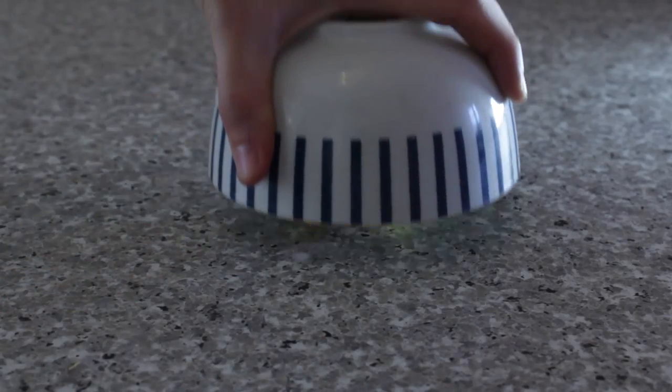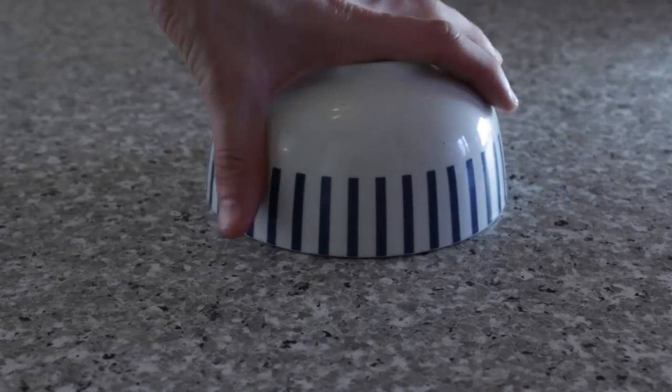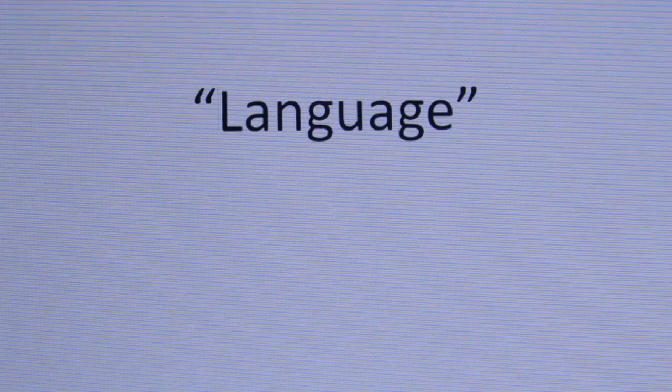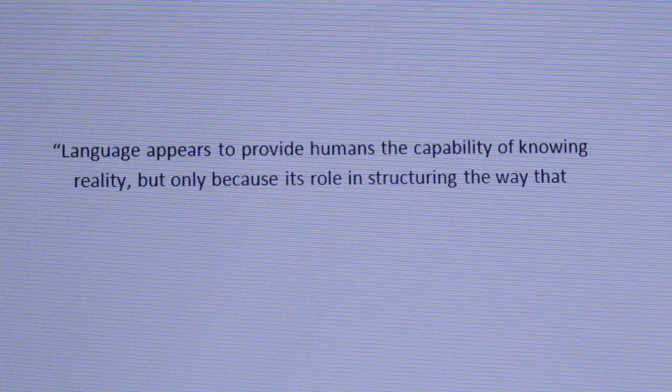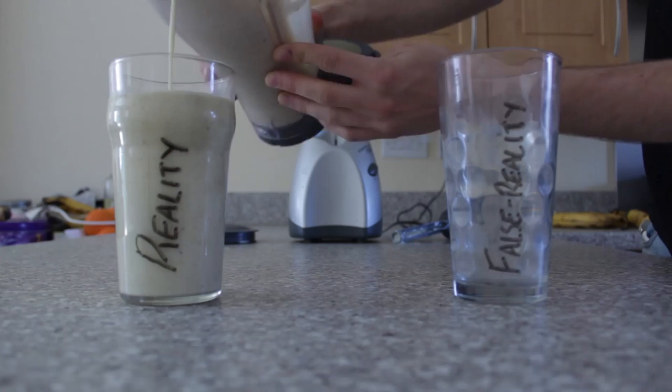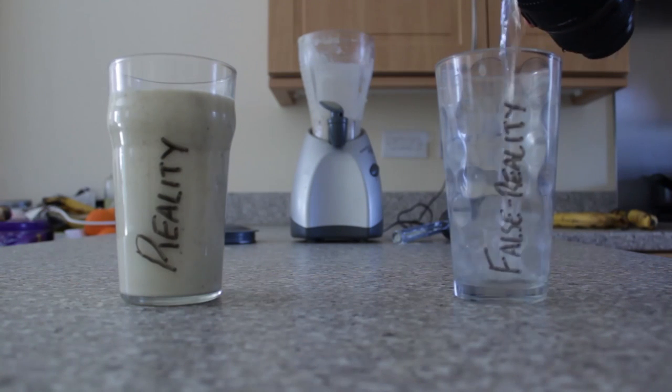This of course is not the case for documentary. But why exactly isn't film real? Film is all about illusion. Whether realist or not, illusion allows connection, which allows for entertainment, or whatever it is that the film or filmmakers intended. This illusion is developed through the use of language that we, as an audience, understand. This could be the language of light — that something that emits light will light up what it's looking at. The language of sound, that something that makes sound will make other people react to it. The language of acting and emotion, that something sad will make someone sad, and something happy will make someone happy. Language appears to provide humans the capability of knowing reality, and only because its role in structuring the way that knowledge is produced is invisible or transparent. In other words, we know the difference between reality and fiction, or a false reality, because we can see how the false reality was made. It's transparent.